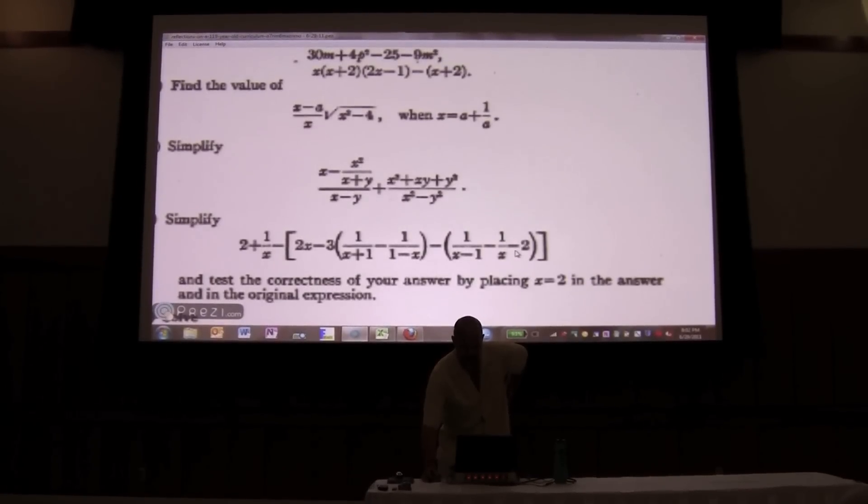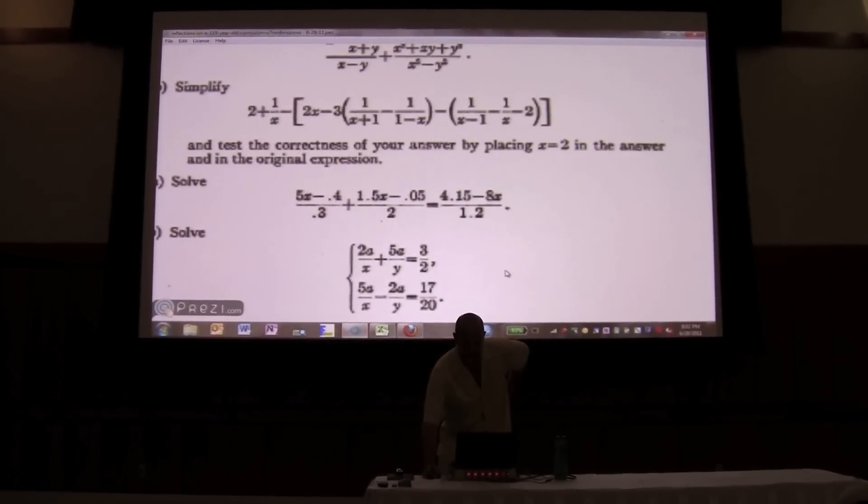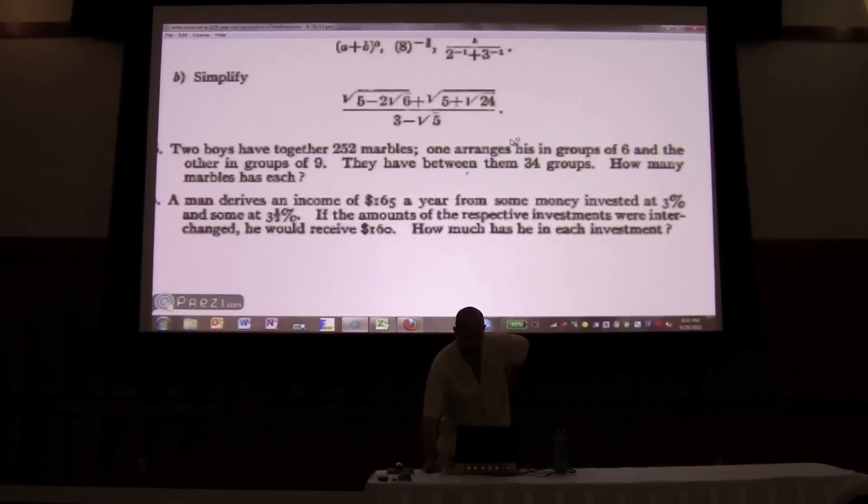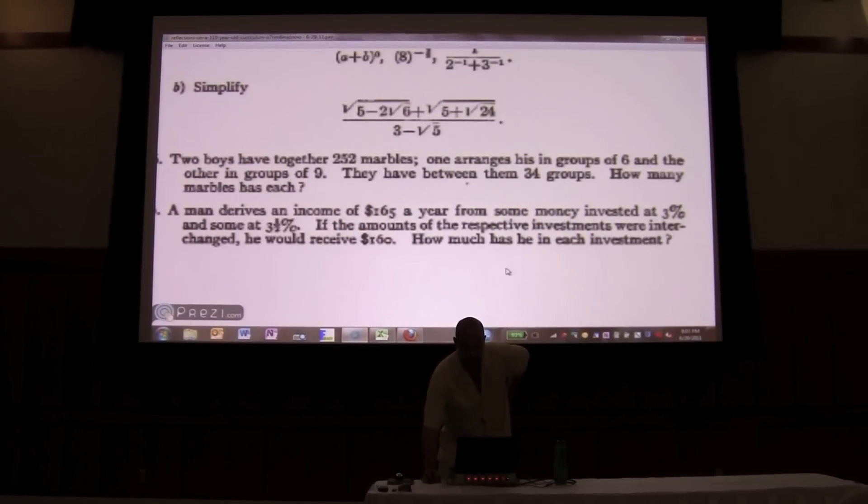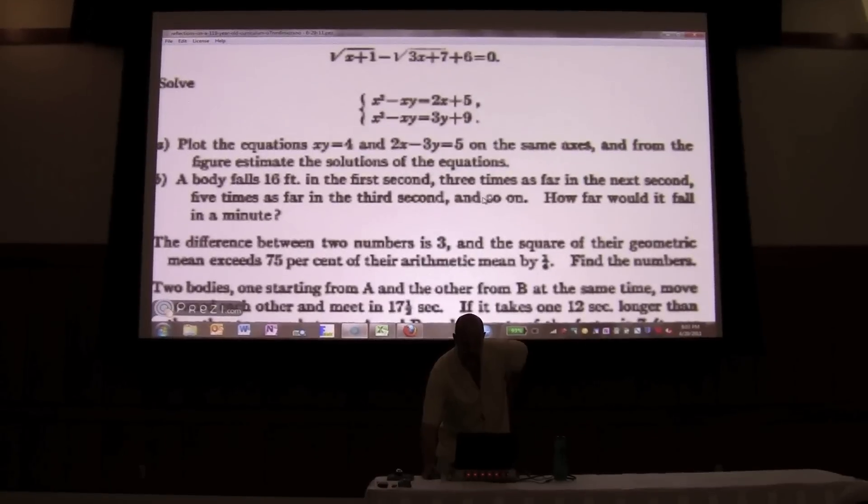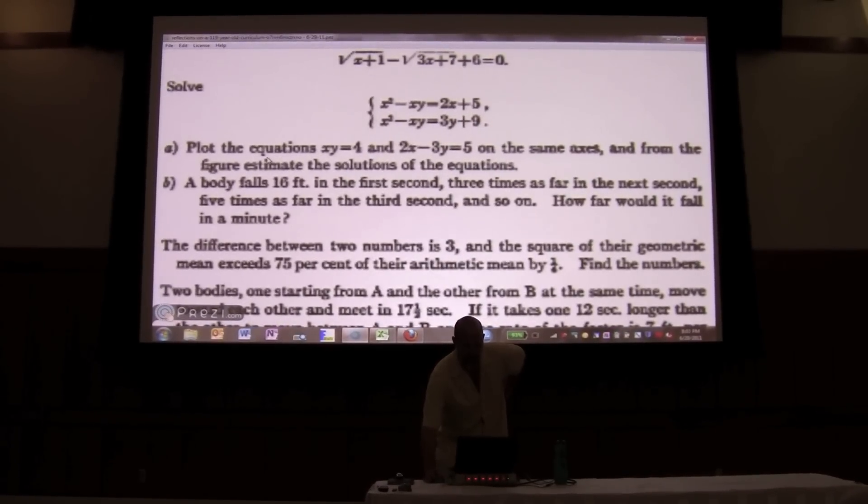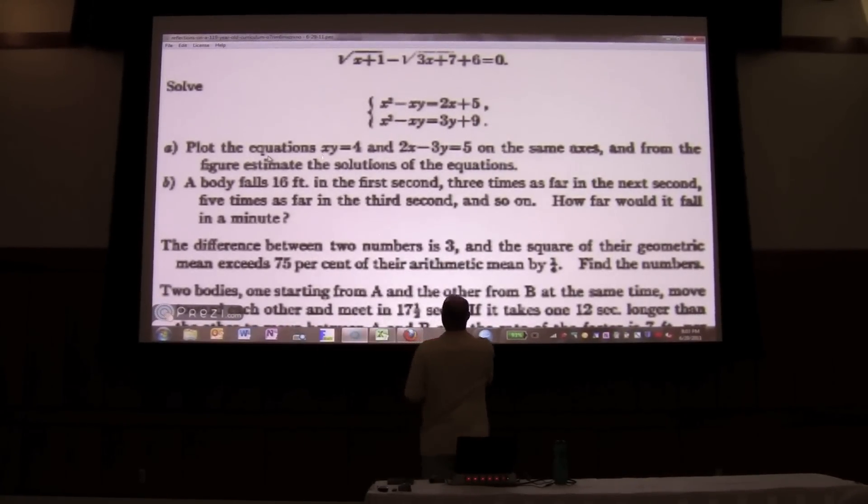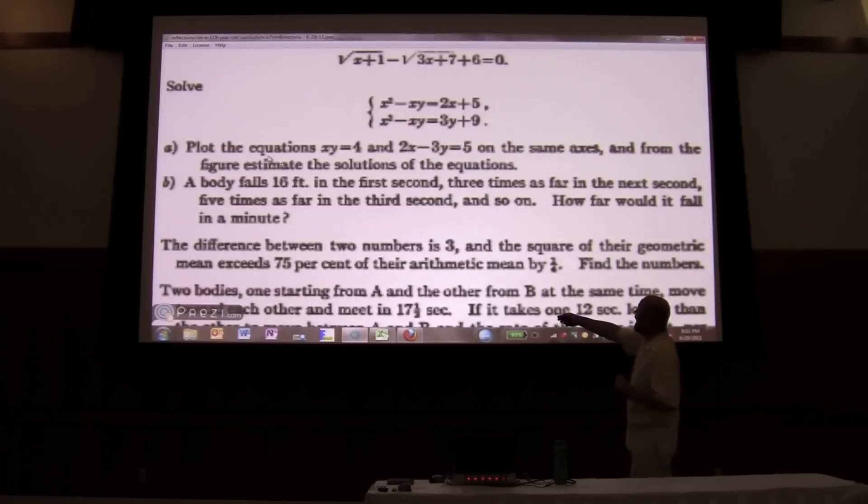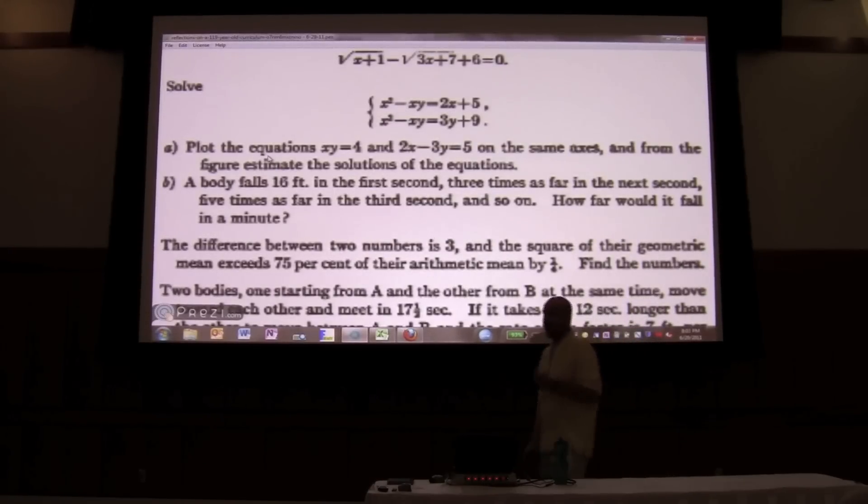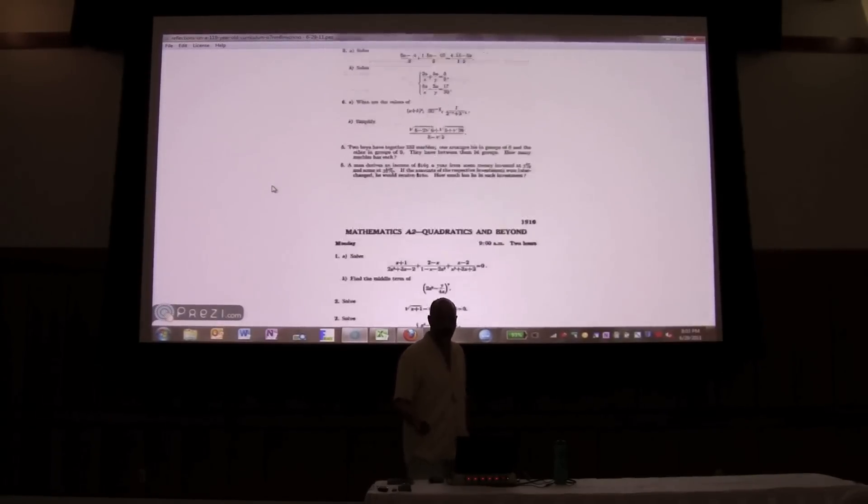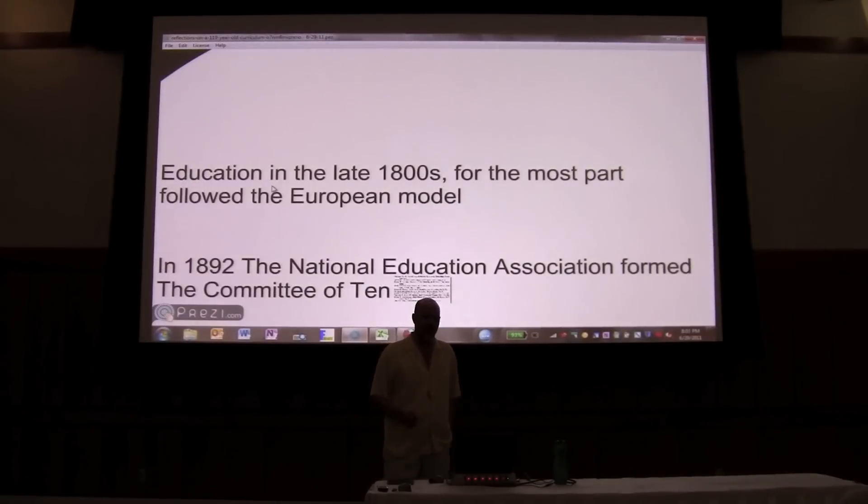This is the second test. Eight to the negative two-thirds. Here's the third test. There's one question that I find quite interesting. They did graph equations. Look at this for a plot. Plot the equation x, y equals four and two x minus three y equals five on the same axes. And from the figure, estimate the solutions of the equations. Actually, quite a progressive question, I think, for 1892. This is actually, happens to be 1916. So that gives you an idea, a second glimpse, of what the curriculum was like at that time.